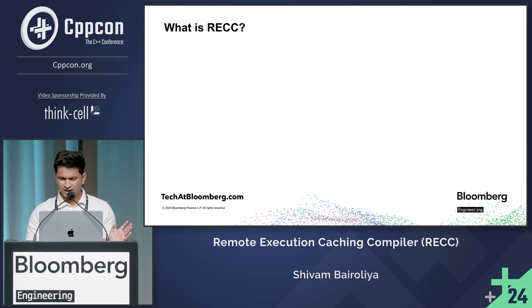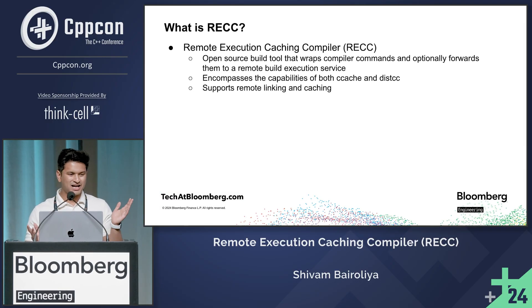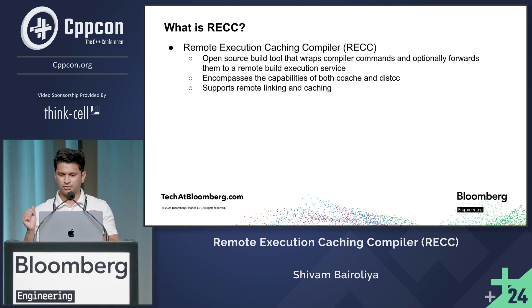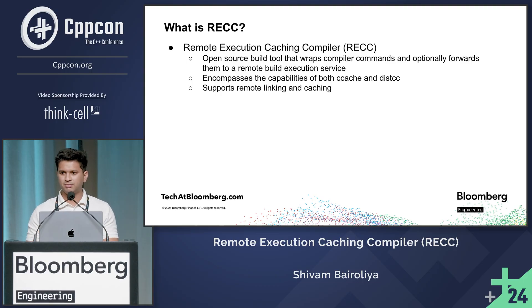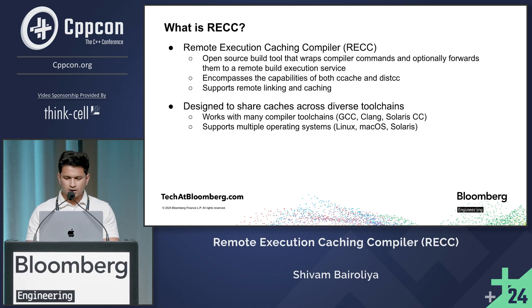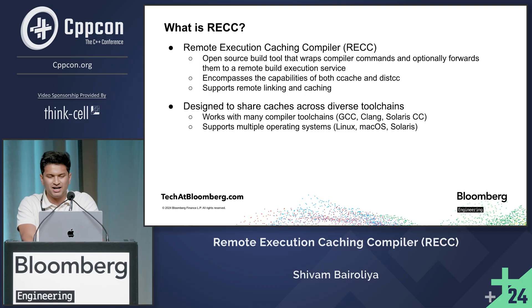So what is REC? REC stands for Remote Execution Caching Compiler. It is a compiler wrapper we implemented completely as open source. REC transparently wraps around your compiler commands to facilitate caching and/or remote execution. It is designed to address build speed challenges by combining the caching capabilities of CCache with the distributed compilation features of distCC. It also supports distributed linking and linker caching. REC also supports a wide range of compilers including GCC, Clang, and Solaris CC.